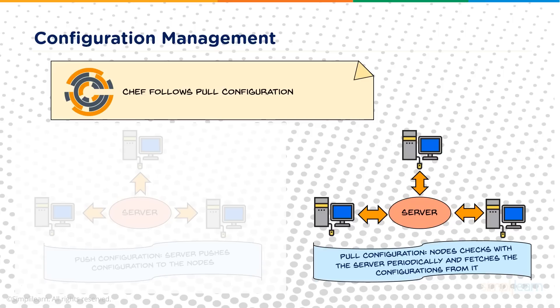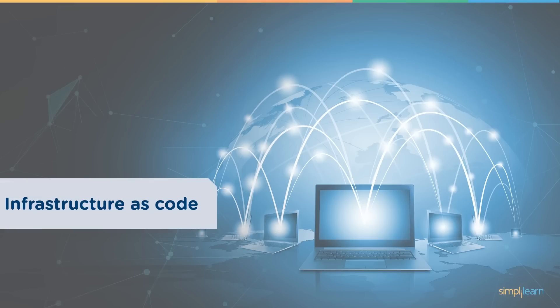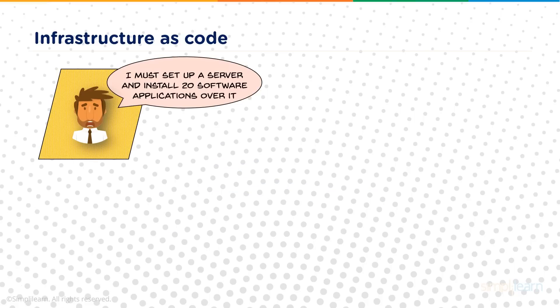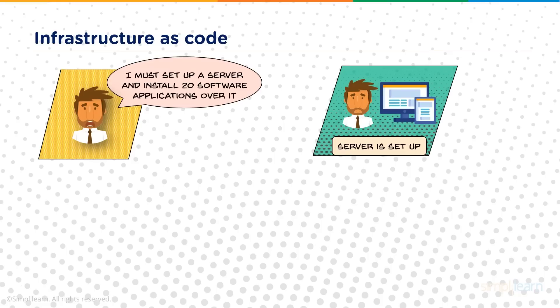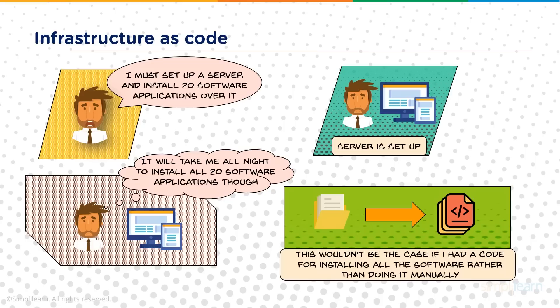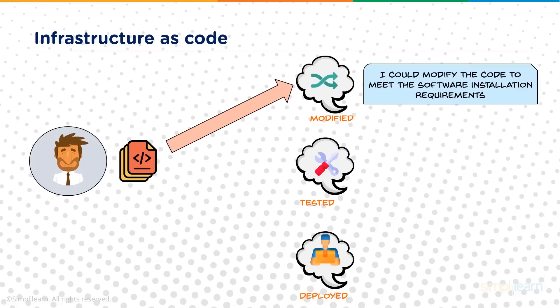Another important term used with Chef is infrastructure as code. Here's a small story: Tim is a system administrator at a large company who receives a task to set up a server and install 20 software applications. He sets up the server but realizes it would take him the entire night to install 20 applications manually. Wouldn't things be much simpler if he just had a code to do so?